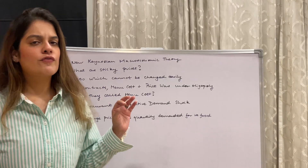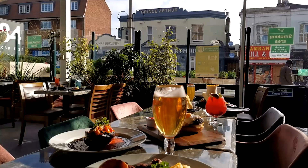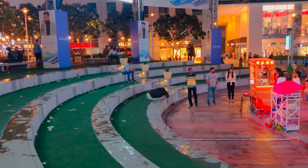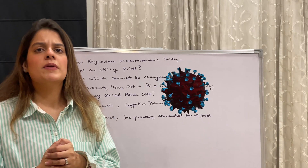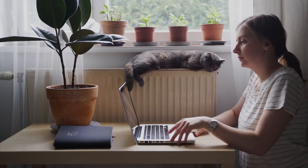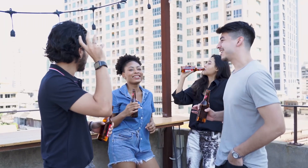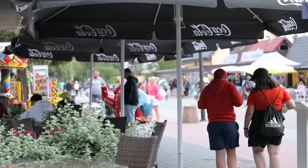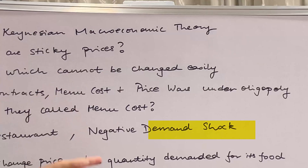Now here's a very interesting example. Suppose there is a restaurant in a peak office area — let's take the classic example of Cyber Hub, which is surrounded by lots of offices and many restaurants. Many people come to eat there, and the restaurants are doing well. But due to COVID, many offices switched to a hybrid or full work-from-home model, meaning far fewer people are coming to the restaurant. The restaurant now faces a negative demand shock — a sudden fall in demand.